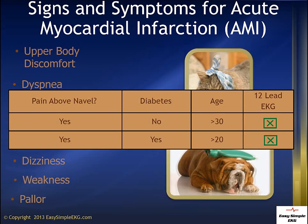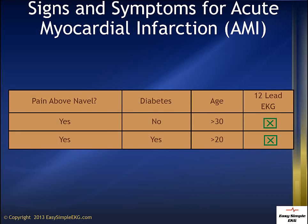The American College of Cardiology recommends that anyone over the age of 30 experiencing pain above the navel should receive an immediate 12-lead EKG. If a person is diabetic and experiencing chest pain, the age has dropped to 20. This is just an indicator of the serious risk that diabetes plays in the formation of coronary artery disease.